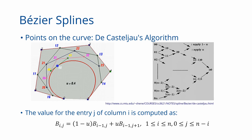What is de Casteljau's algorithm? A Bezier curve P(t) equals the summation of b_i times J_{n,i}(t). Suppose you want to evaluate this curve — given some value for t, say t = 0.4, you want to find the point on the curve for that parameter value. One way is to substitute t = 0.4 into this equation, compute the Bernstein basis, multiply by all the control points, sum them up, and get the value of P(t).